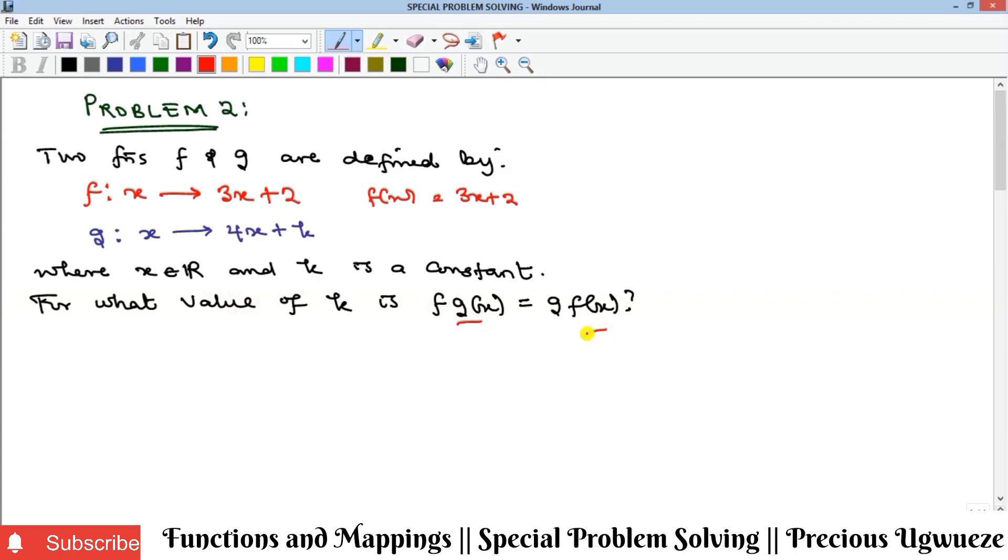This is another way of writing composition, that is f composition g. On what condition will this be possible? Let's quickly look at that. First of all we find the value of f∘g. F composition g is the same thing as f(g(x)).